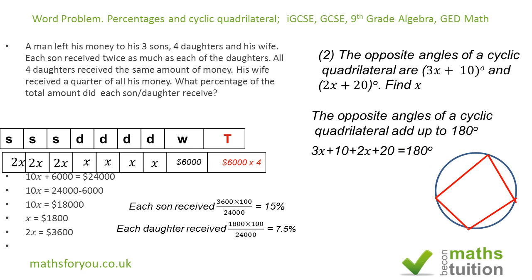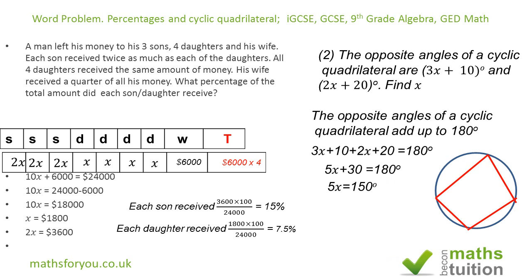Collecting like terms, we have 5x + 30 equal to 180 degrees. Subtracting 30 from both sides gives 5x equal to 150 degrees. Dividing both sides by 5, we get x equal to 30 degrees.